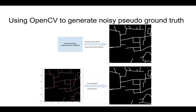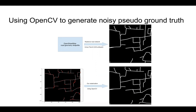First, we develop a method using OpenCV to generate noisy pseudo-ground truth. We utilize geospatial data from OSM and use an OpenCV algorithm to render pseudo-ground truth data from the road geometry shape file.